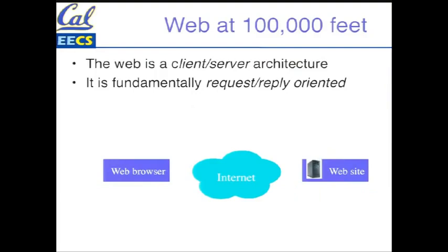So what does the web look like? We're going to use an analogy of altitude — we'll start at about a hundred thousand feet and then zoom in progressively to more detail. At the very top level, the web is a client-server architecture that's request-reply oriented. A web browser sends a request to a website through the internet, and the website replies to that request.